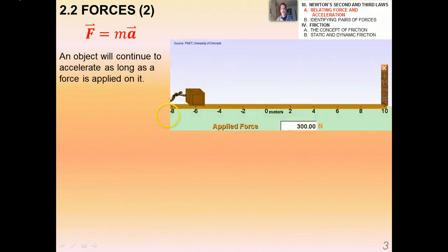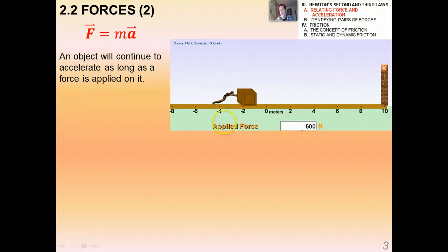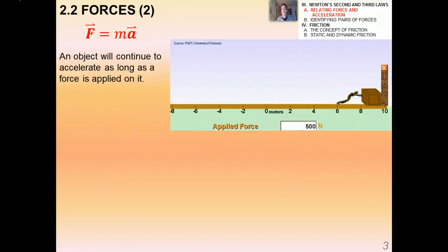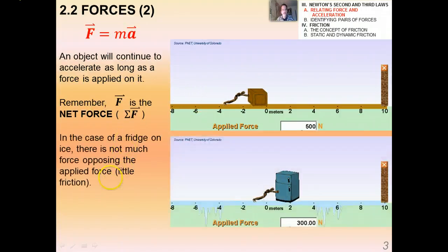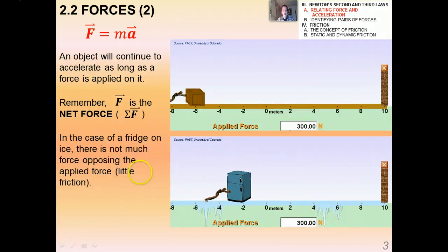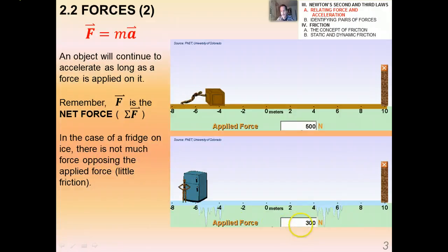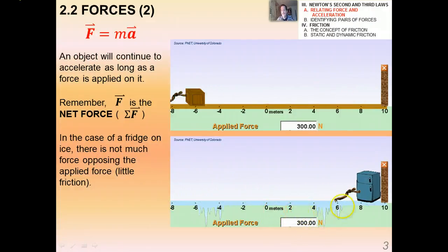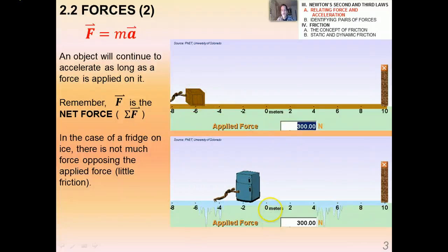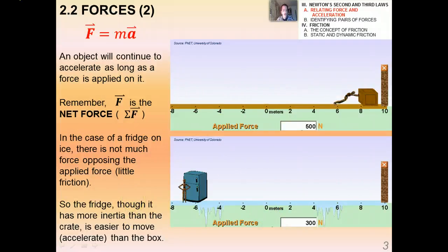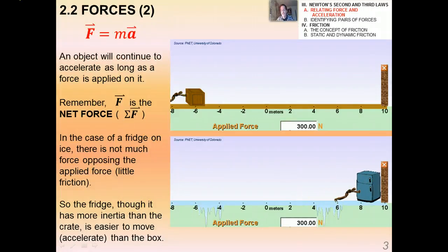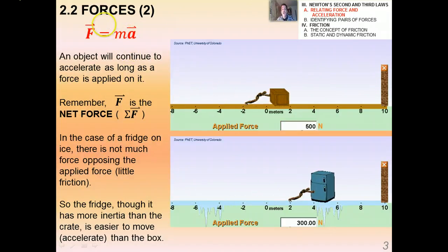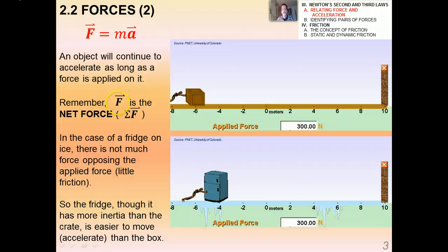An object will continue to accelerate as long as a force is applied. In this PhET simulation, a person pushing a box at 300 newtons doesn't move it due to friction; I have to change to 500 newtons to get it moving. Once moving under a constant force, the box constantly accelerates to the right. For a refrigerator being pushed on ice there's very little frictional force, so with 300 newtons applied the refrigerator accelerates much more readily, even though it has more inertia than the box.